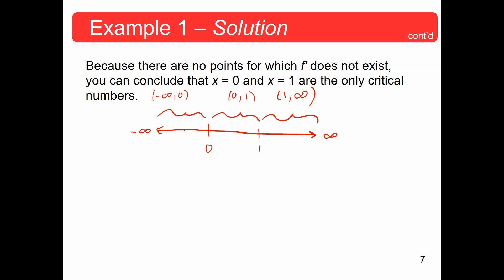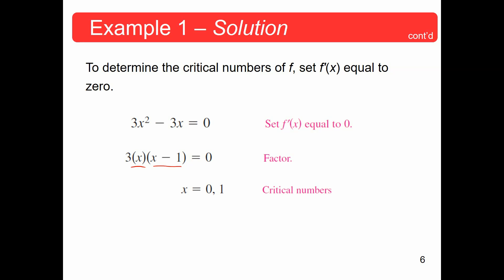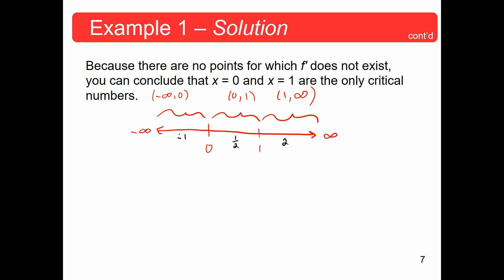We're looking for whether the derivative f′(x) = 3x² − 3x is positive or negative in each interval. Plugging in x = −1: 3(−1)² − 3(−1) = 3(1) + 3 = 6, which is positive. That means we are increasing on the interval from negative infinity to zero because the derivative is positive.